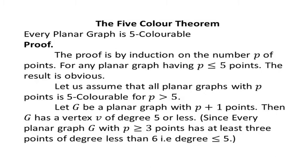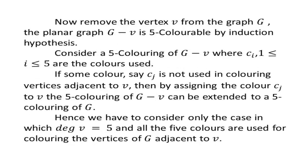Now consider G is a planar graph with p+1 points. Then G has a vertex V of degree 5 or less, because we have one result that every planar graph with p greater than or equal to 3 points has at least 3 points of degree less than 6. That is, the degree must be less than or equal to 5.